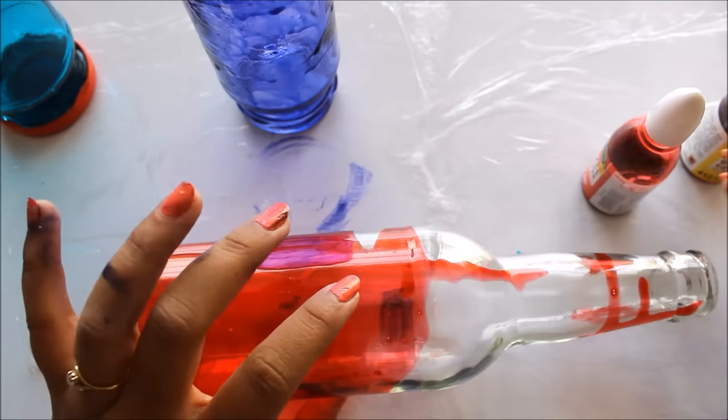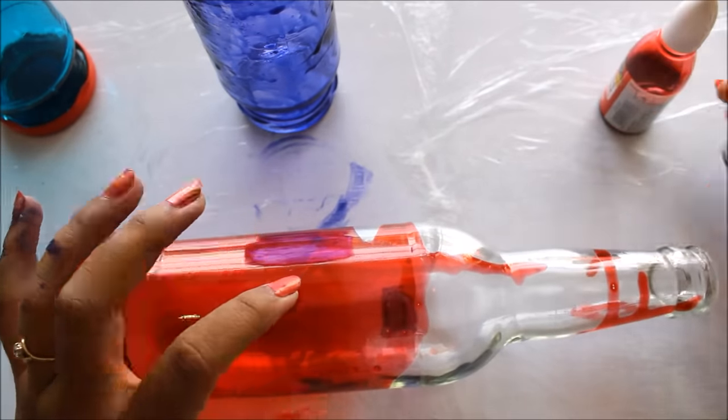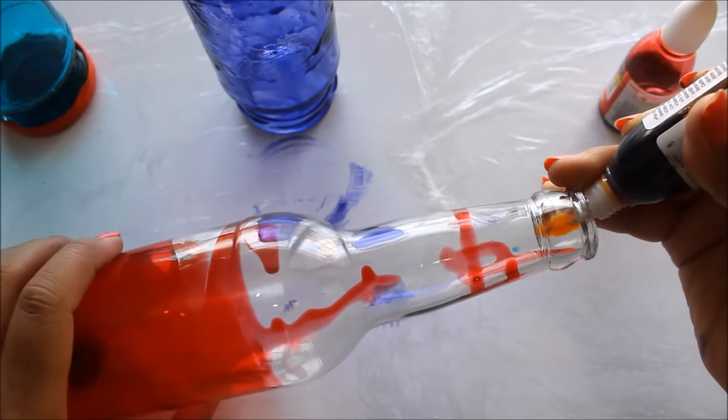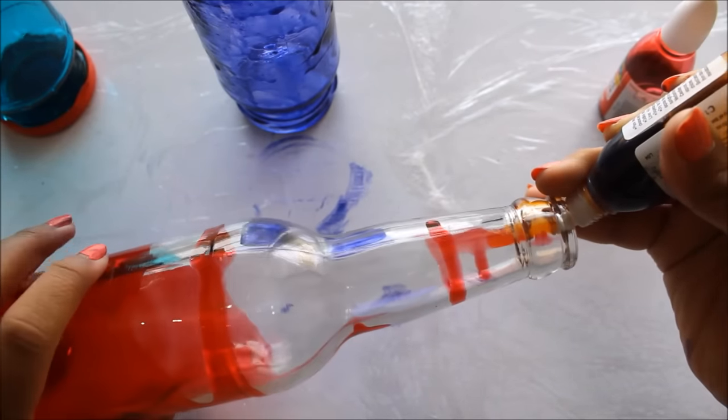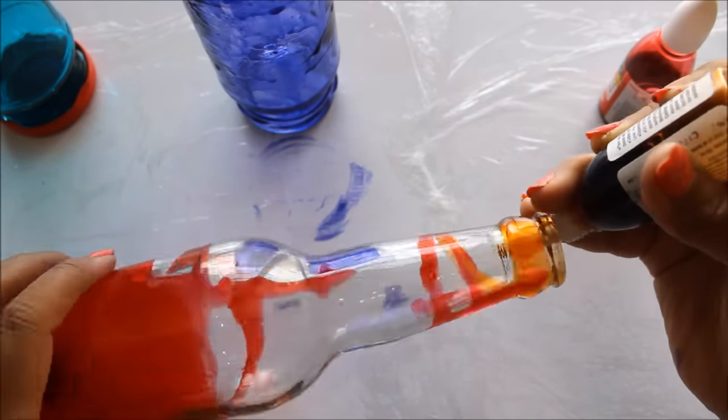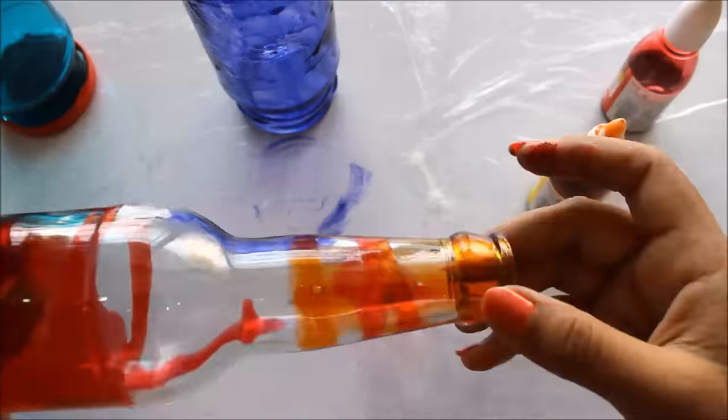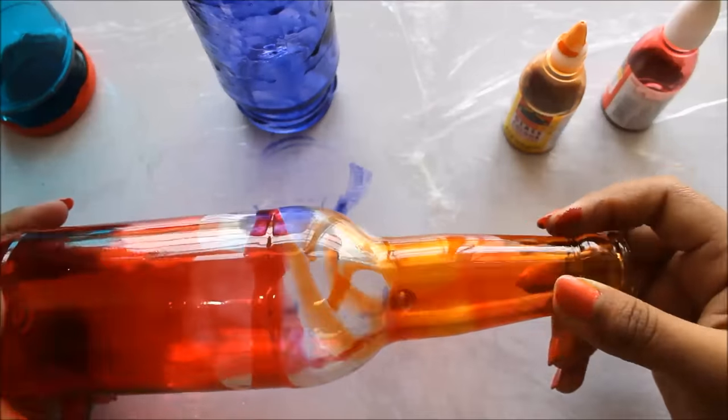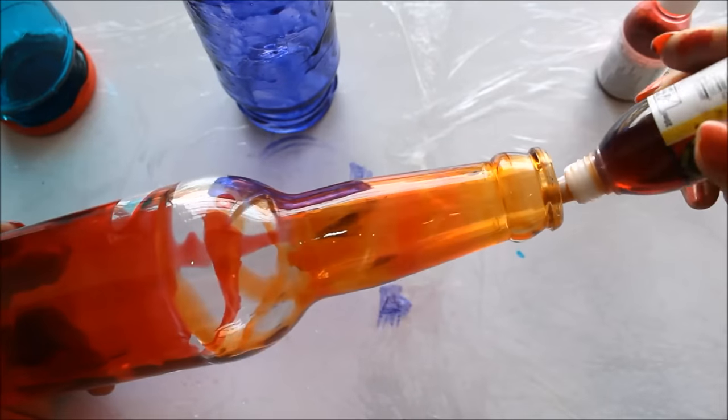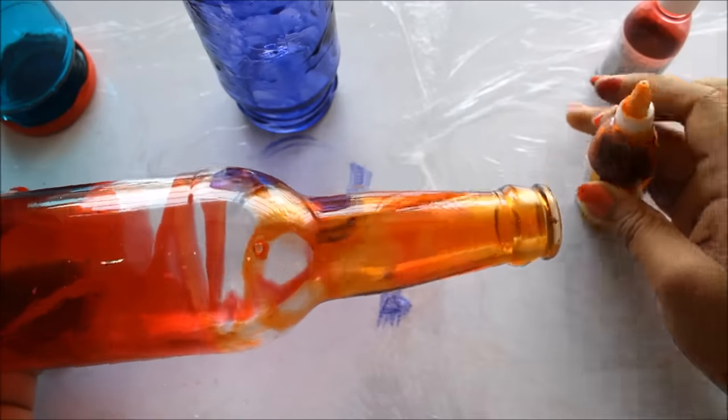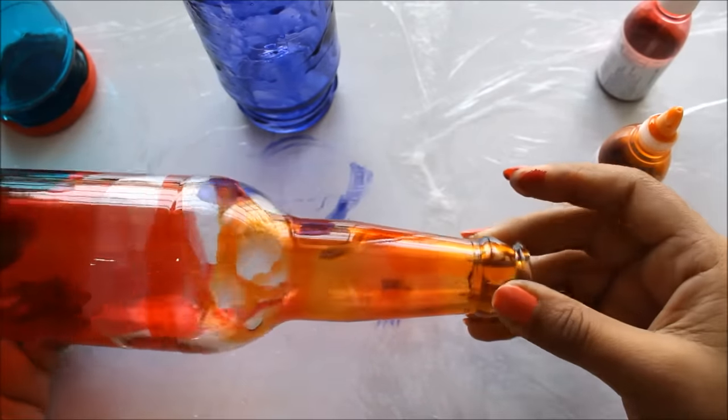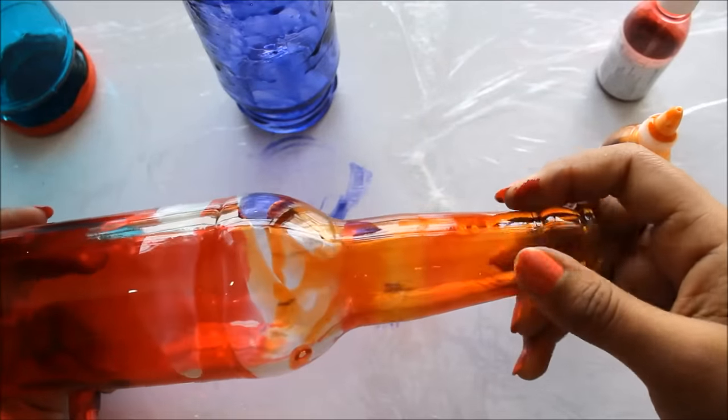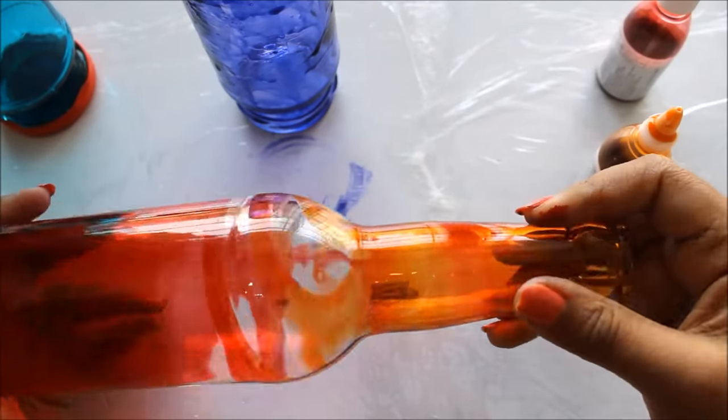We'll keep only this much part as red and now we'll certainly pour our yellow color, a very little quantity, and just keep rotating our bottle. Now again I'm willing to pour some more yellow and I'll start rotating from where I have poured it and slowly the color will move downwards as I rotate the bottle.